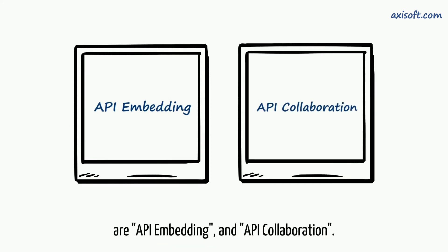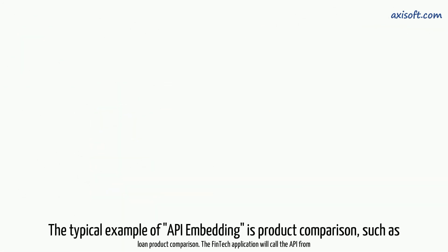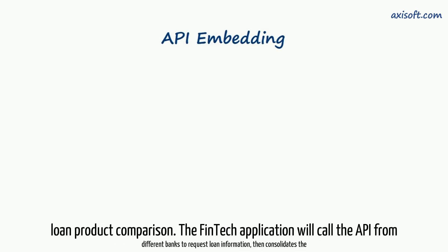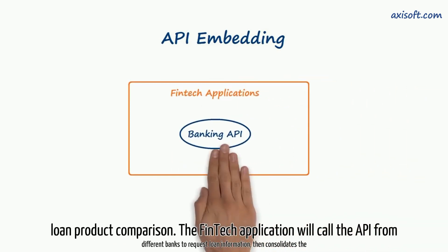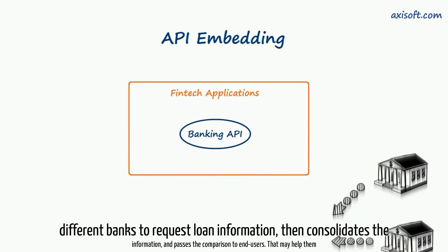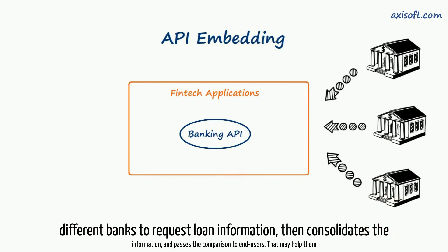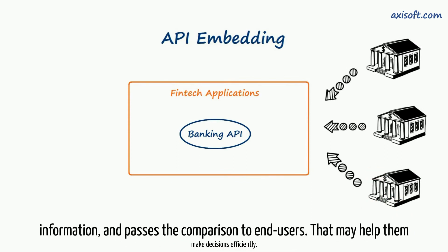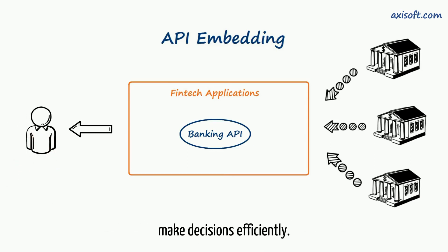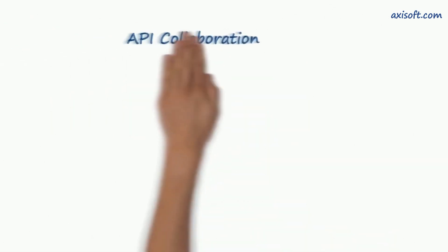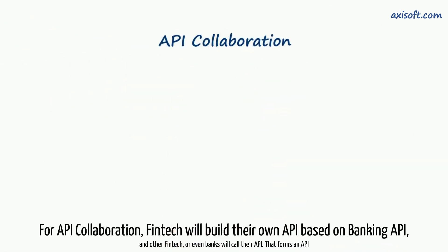The typical example of API embedding is product comparison, such as loan product comparison. The fintech application will call the API from different banks to request loan information, then consolidates the information and passes the comparison to end users, which may help them make decisions efficiently.